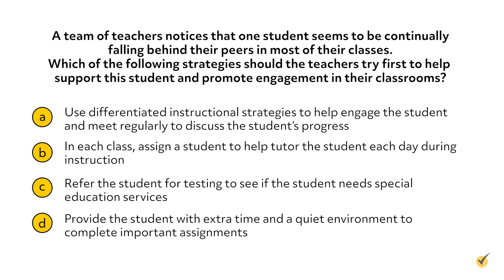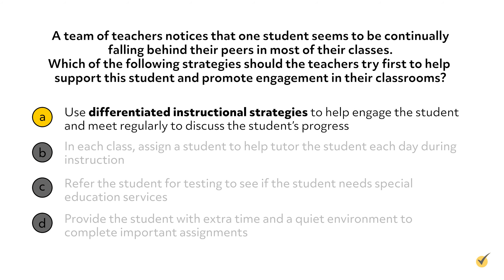Let's look at one more question. A team of teachers notice that one student seems to be continually falling behind their peers in most of their classes. Which of the following strategies should the teachers try first to help support this student and promote engagement in their classrooms? In spite of the fact that the student may require the things referenced in the response options, such as extra time or referrals for additional services, if we look for the keyword, only one answer includes it: differentiated instructional strategies. Differentiated instruction means tailoring the way you are teaching the information to meet individual needs. Picking this answer shows the examiner that you recognize that each student has their own unique needs and you are going to work hard to be able to meet them.